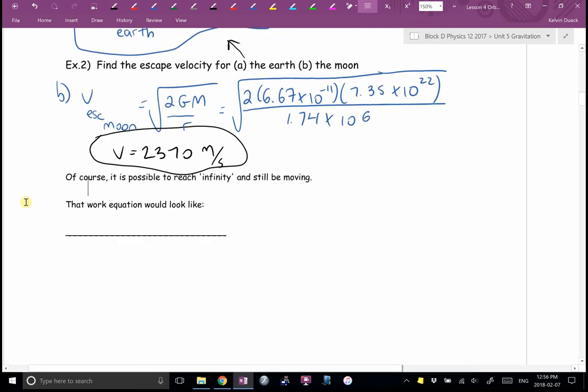It's possible to reach infinity and still be moving. So that equation would look like this. Potential initial plus kinetic initial equals potential final plus kinetic final. The potential final would still be zero because you're out at infinity. But if you're still moving, you'd have some leftover kinetic. And then it would be the same substitutions. Potential would be negative big G, big M, little M over R initial, a half M V initial squared, a half M V final squared.